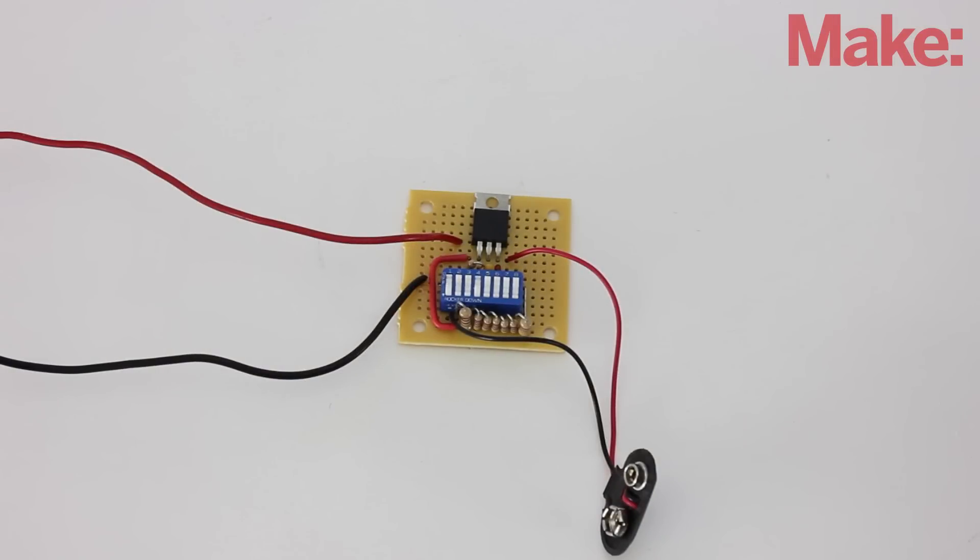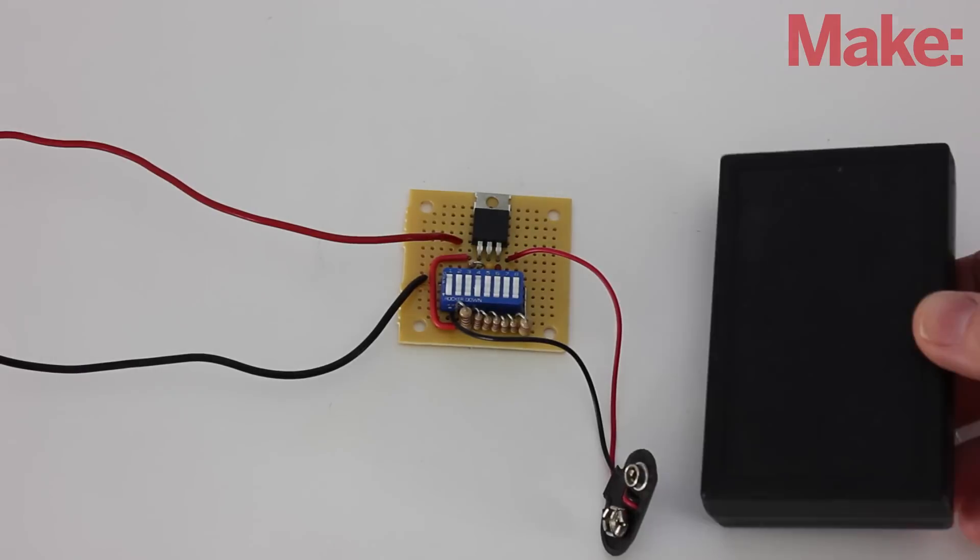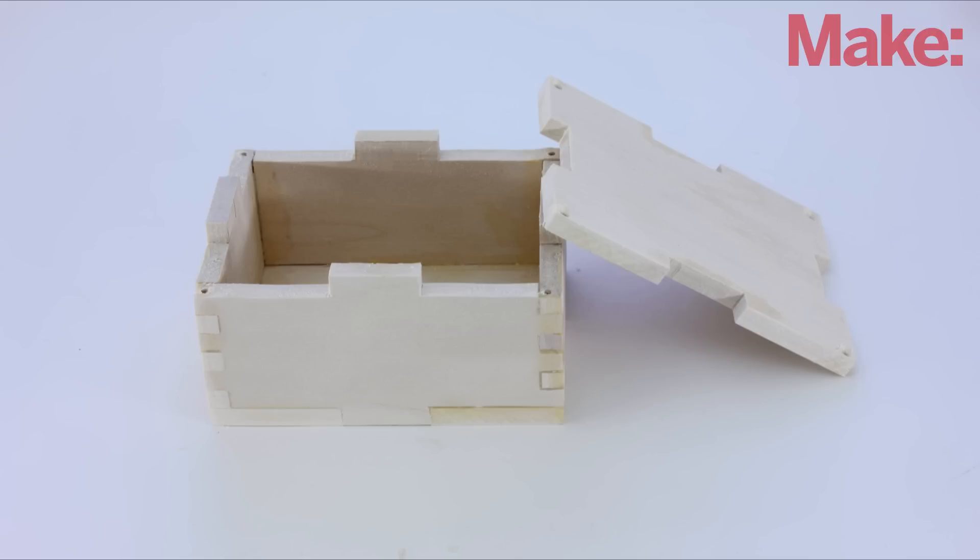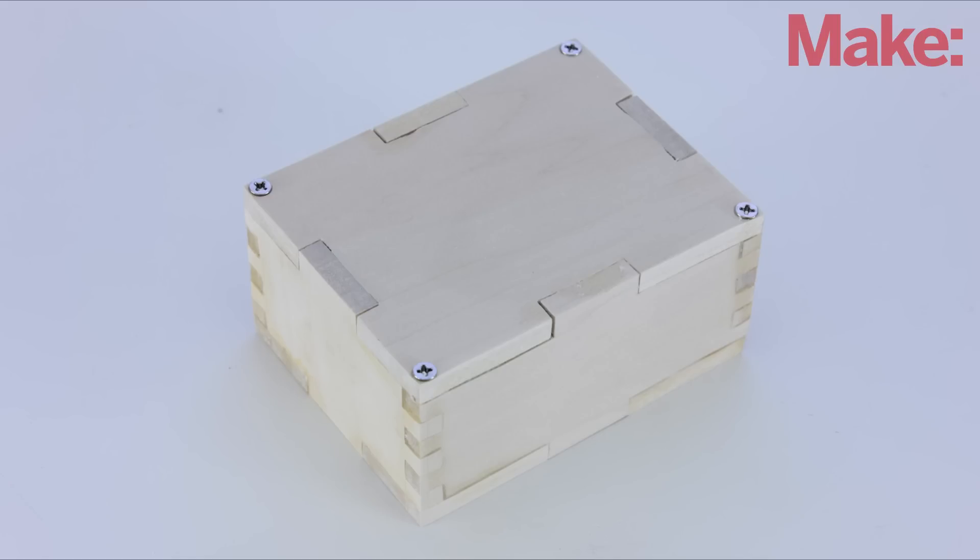You've just finished building an awesome electronics project. Now you need to find a housing for it. You could just use a cheap plastic box from a store, but why not make your own custom project enclosure? They're easy to build and you can make it to fit exactly what you need.